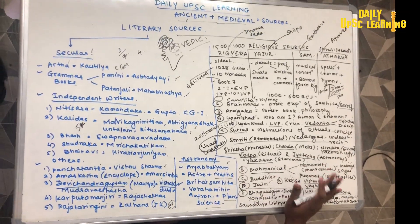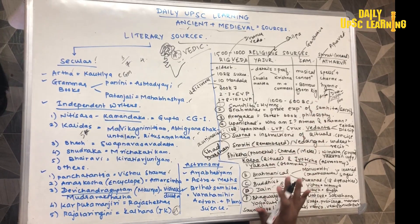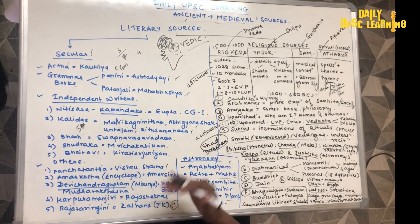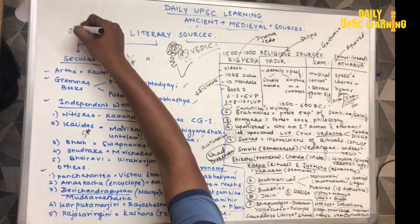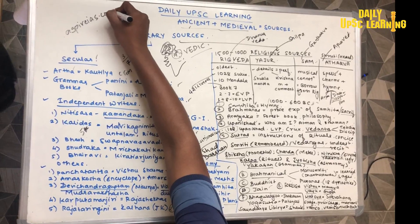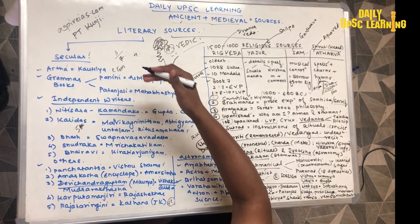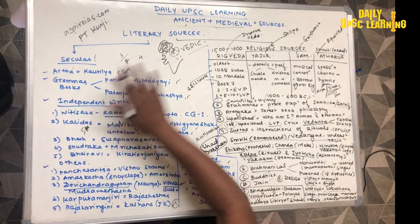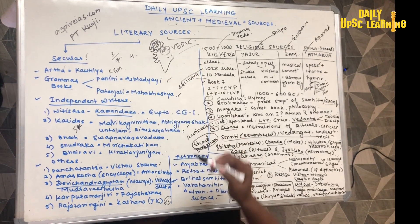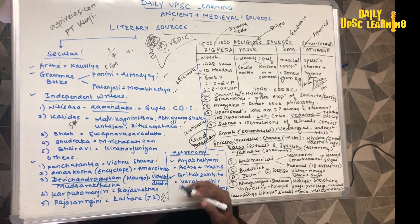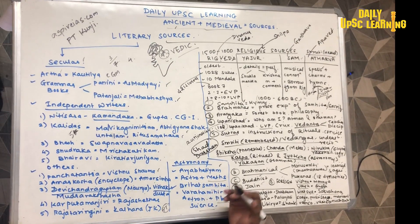So guys, this is all about the ancient sources. The next video will remain on medieval sources. These sources are necessary because there is always a question in the alternate year. You will find this mind map at www.aspireis.com in the PT Kunji section, where daily UPSC learning videos will be available. The ancient history tab will have this mind map available in one to two days. Modern India PDF is already available — please download and revise it multiple times. Thank you guys, I hope you are liking these videos. Please comment below for our motivation.